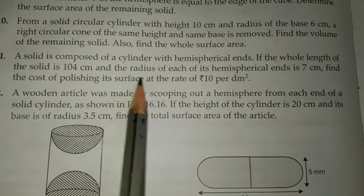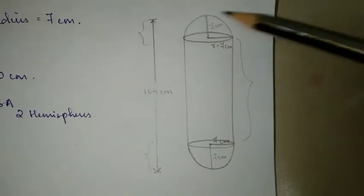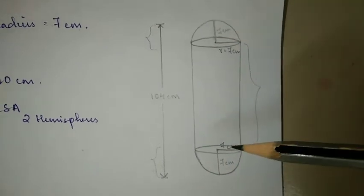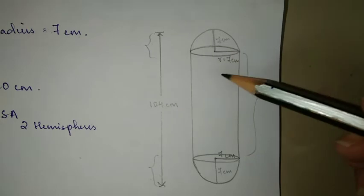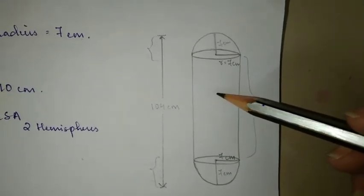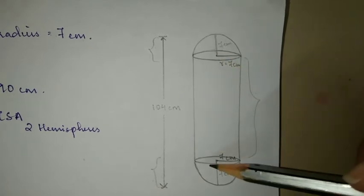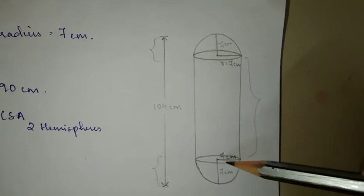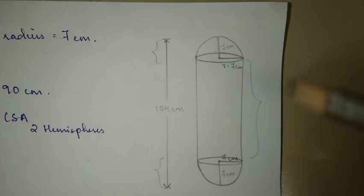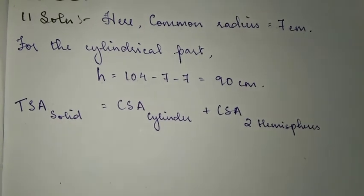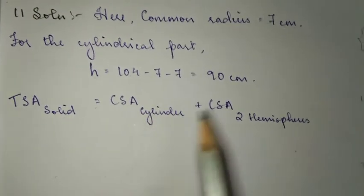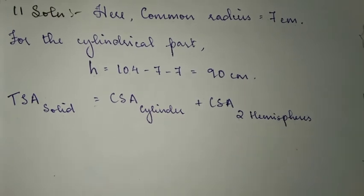Now, since we need to polish the surface, like I've always told you before, whenever we have to join a solid with one or more other solids, we need the total surface area.